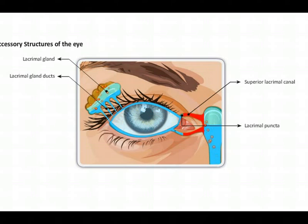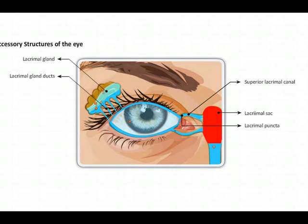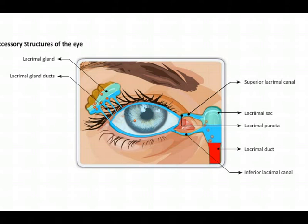The lacrimal canal is the canal between the puncta and the sac. The lacrimal sac is the area where the drained fluid is collected. The nasolacrimal duct is the duct through which the drained fluid flows into the nose.